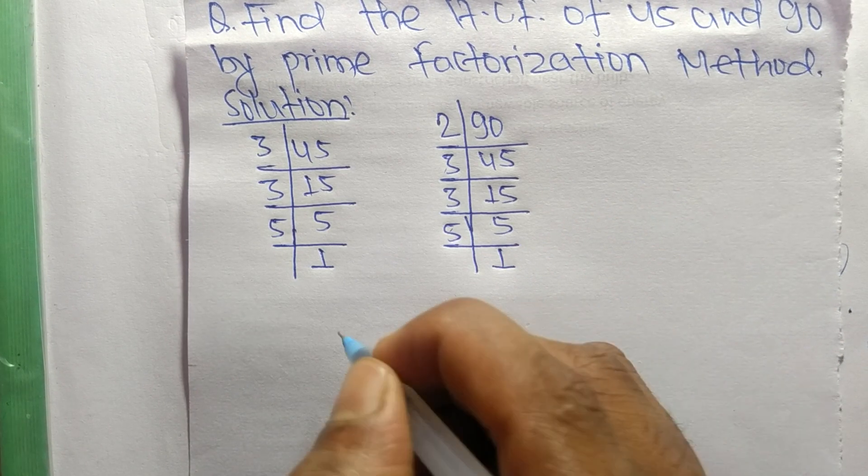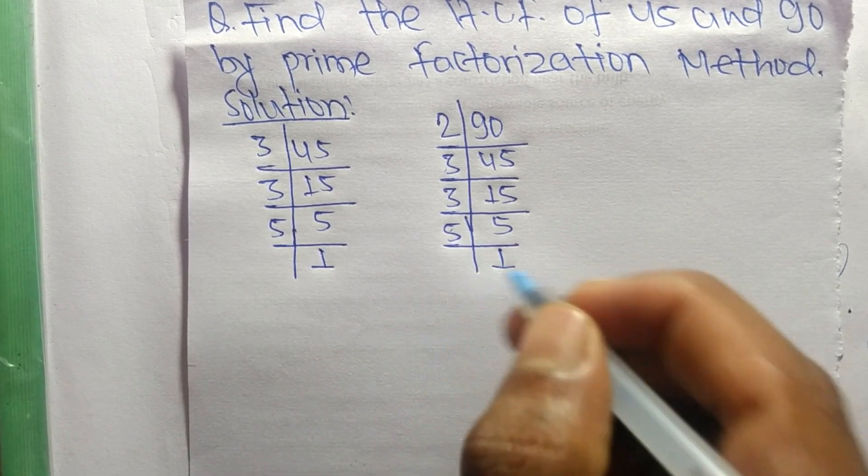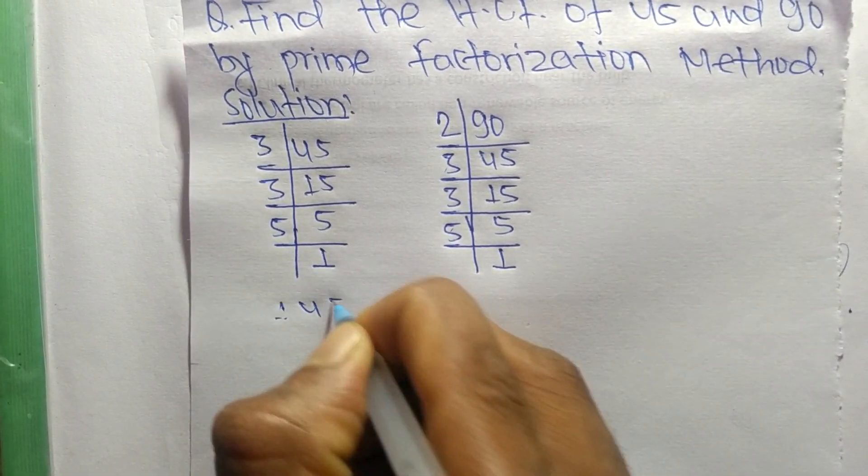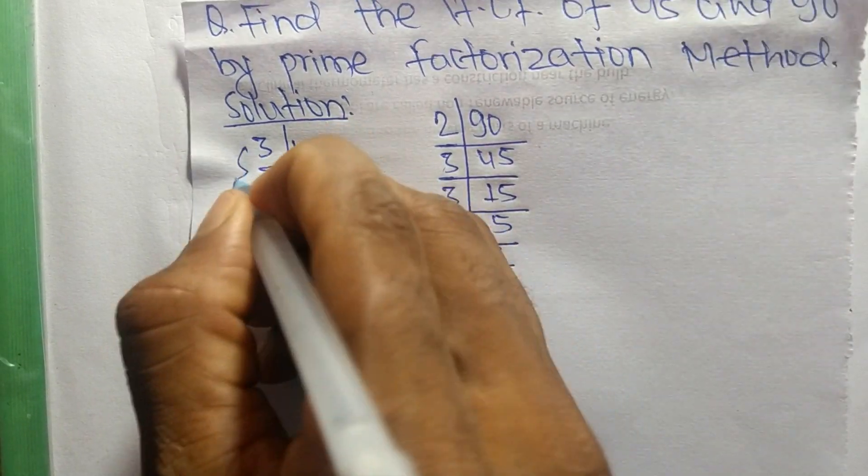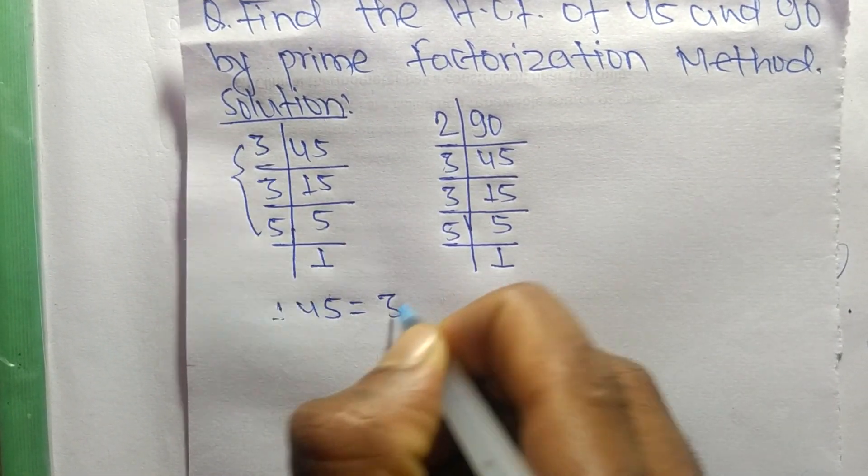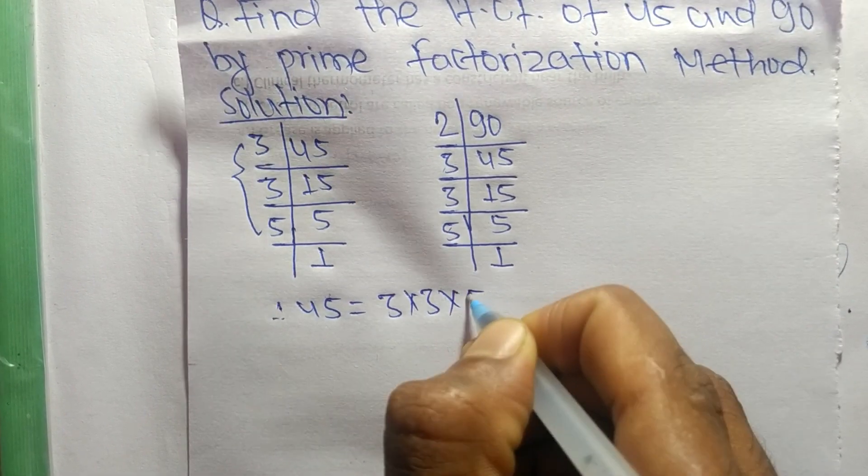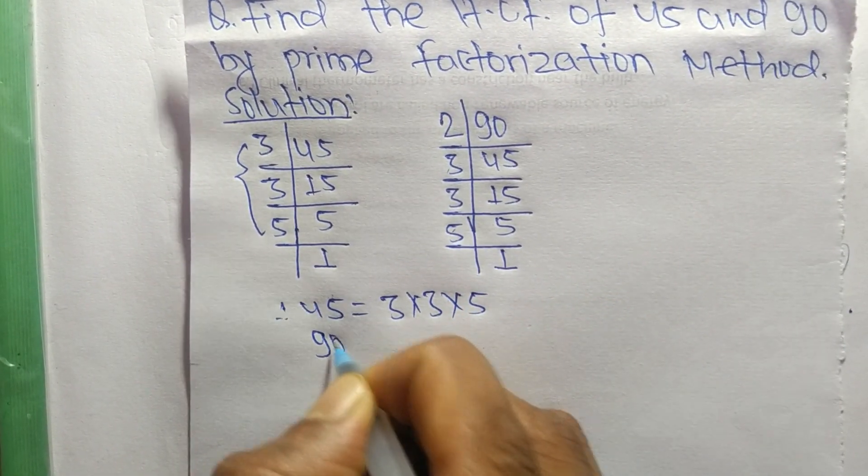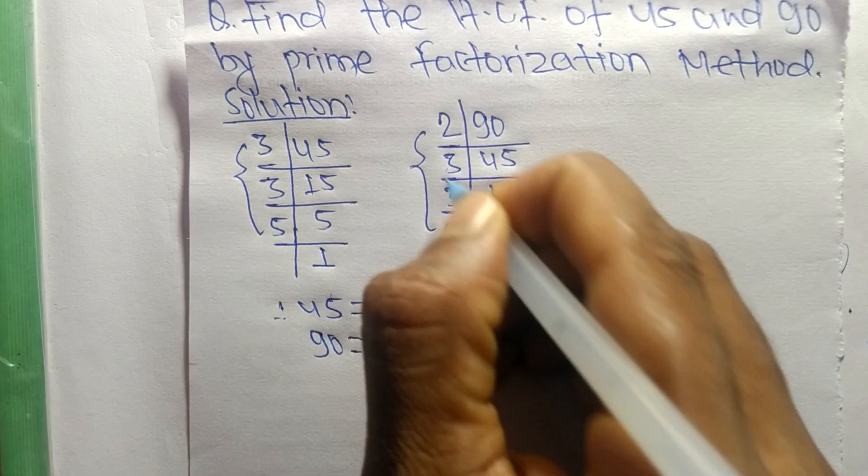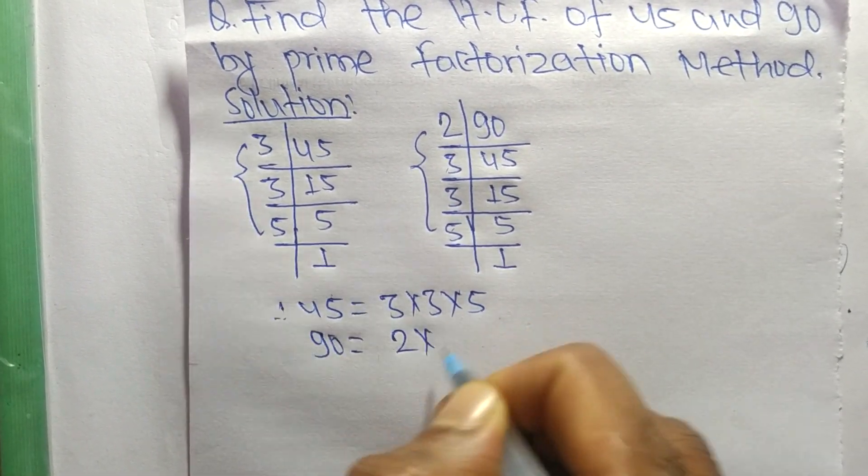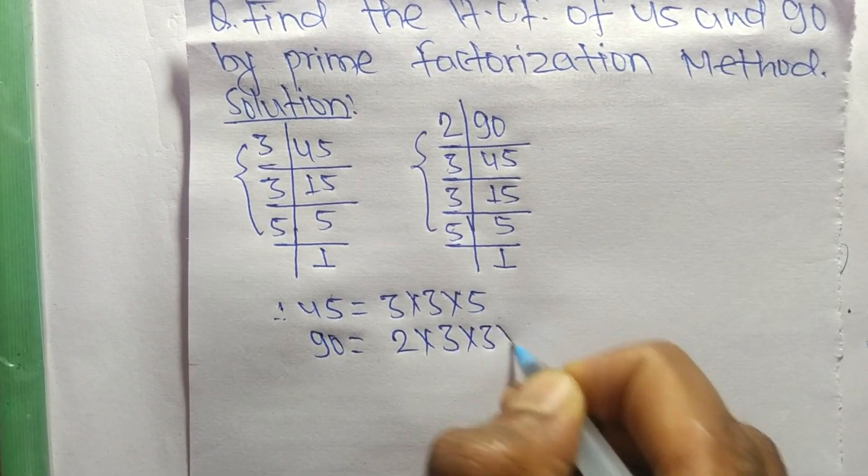So now from these prime factors we can write 45 is equal to 3 times 3 times 5. Likewise, 90 is equal to 2 times 3 times 3 times 5.